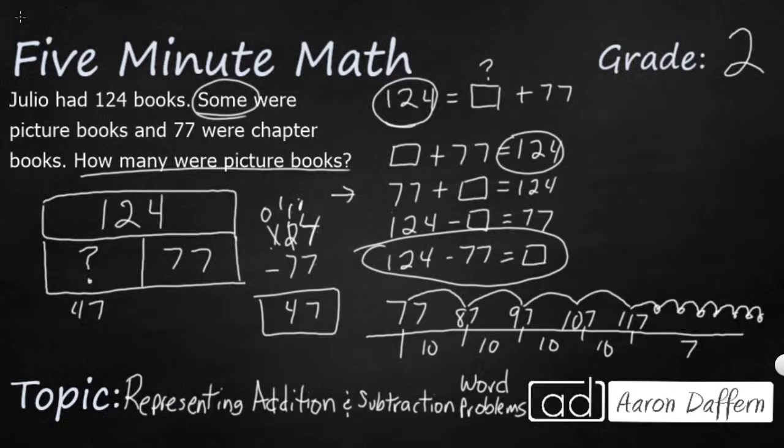So 10, 20, 30, 40 plus the seven. And guess what I've got? 47. So you can use the fact families to find a related subtraction sentence, or you can use hops, a number line, and you can just kind of hop up by tens and then ones to add up to the number that you're looking for.